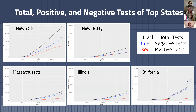Here too we have visualizations showing the total tests and categorizing them by positive and negative results. It's again clear that New York has the most tests, both positive and negative. It's also interesting to look at California's irregular trend line, which can be explained by difficulty in reporting test results.